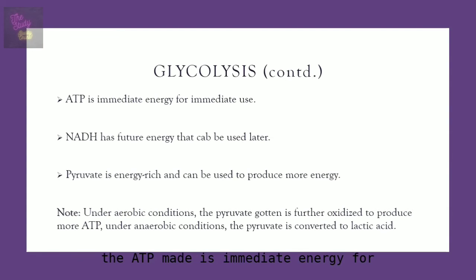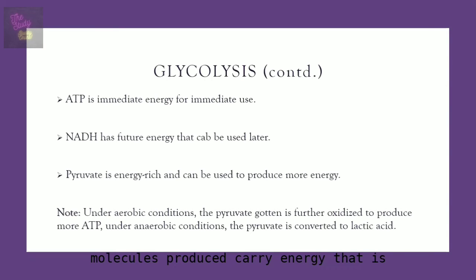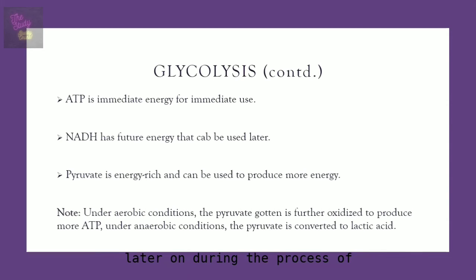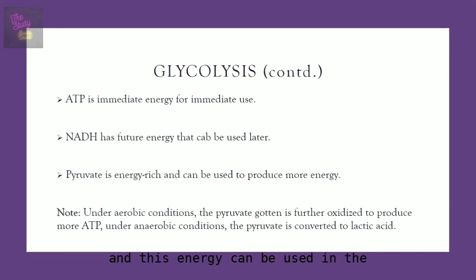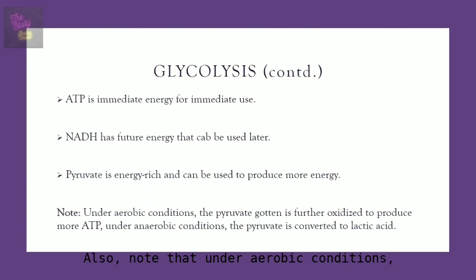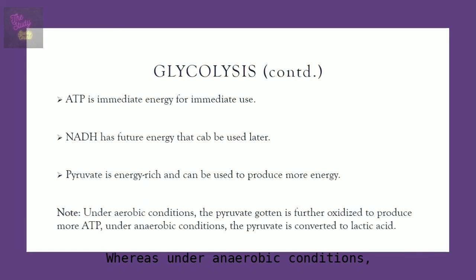The two ATP made from glycolysis provide immediate energy for immediate use. However, the two NADH molecules carry what is called future energy, as they can be used later during cellular respiration. Similarly, the two pyruvate molecules also contain future energy because they still hold electrons, which can be used in cellular respiration to produce more ATP.